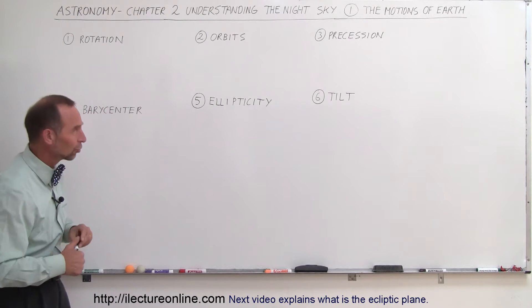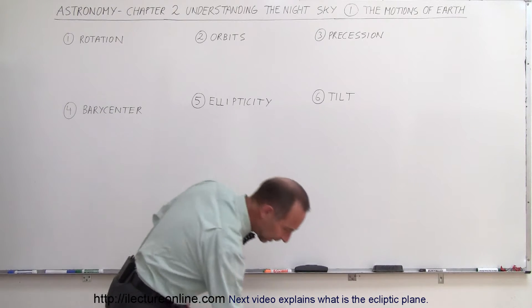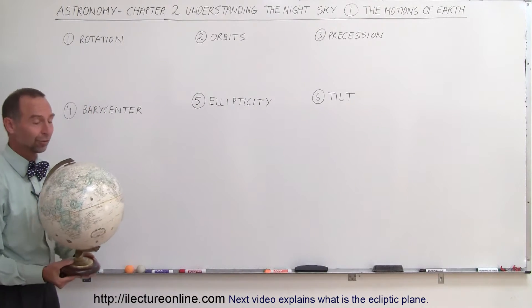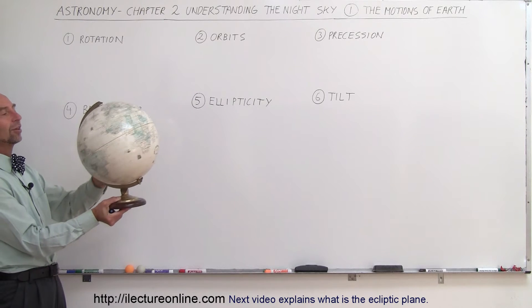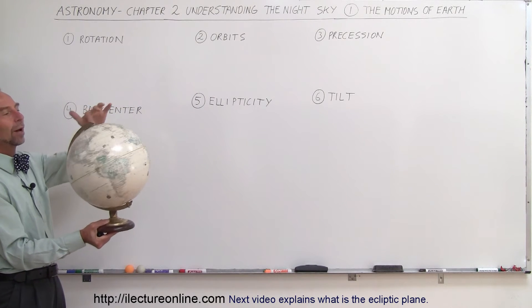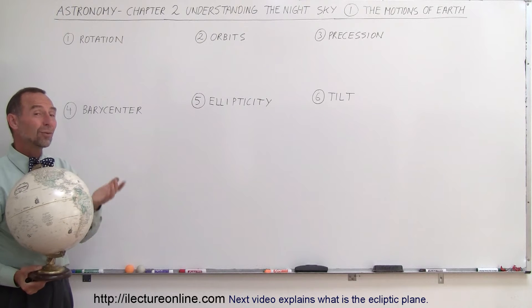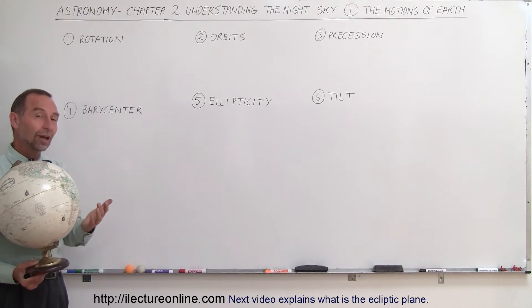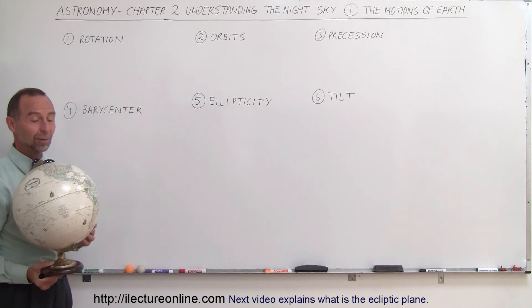So let's talk about those six motions. Well, I have a globe right here. It'll probably help me explain some of them. The first one, everybody is, of course, familiar with, the Earth rotates on its axis. The Earth will go around its axis every 23 hours and 56 minutes. People say, well, wait a minute. Isn't it every 24 hours? No, it turns out it's 23 hours and 56 minutes.